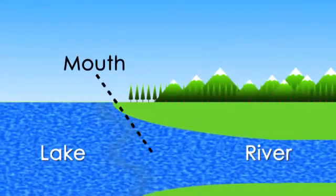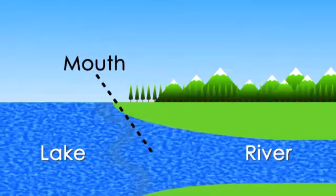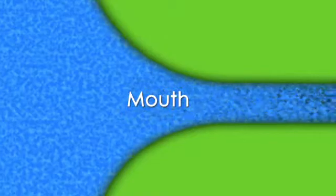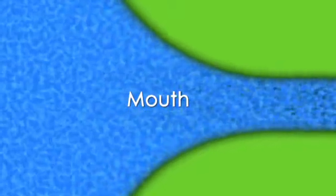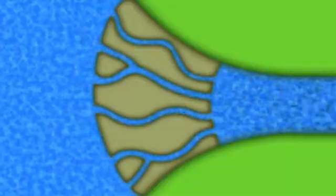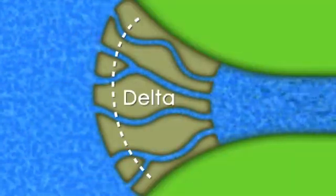A river's journey ends when it meets a lake or the sea at a point called its mouth. Rivers play an enormous role in shaping the earth through erosion, creating geological formations such as canyons. Rivers create as well as destroy. A river's mouth is often clogged by silt and dirt that's been carried down the river's path, and this sometimes forms a landmass called a delta.